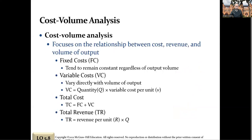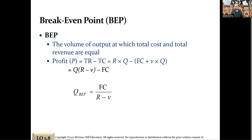Now we're going to do cost-volume analysis on Excel. The idea is that your fixed costs plus all variable costs — meaning cost per unit times quantity produced — combined are your total cost. Total cost equals fixed cost plus variable cost. There's also the break-even point formula, which we're going to cover, but we're switching to Excel now.